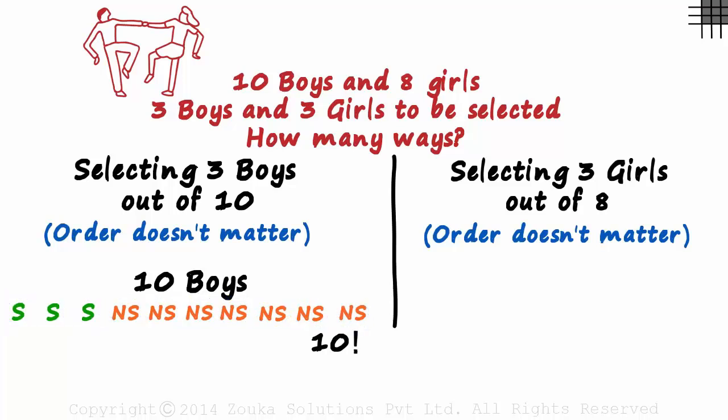These 3 are not distinct, and these 7 also are not distinct. Now how does this 10 factorial count the cases of 3 boys being selected? It assumes that B1, B2, B3 is different from B2, B1, B3 or B3, B2, B1 and so on. There are 3 factorial or 6 such ways which 10 factorial assumes to be different.